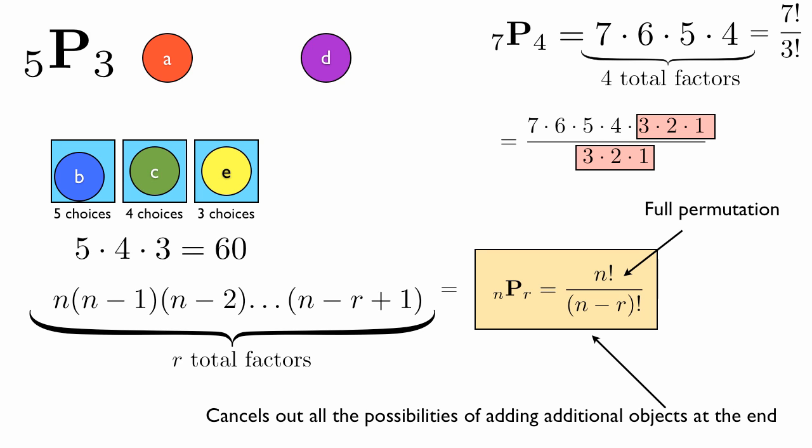So the key thing to keep in mind: the first number tells you where you start out from. Your first number you're going to multiply is always going to be 7 or 5 or whatever the first number is in the permutation notation. The second number tells you how many times you multiply it, going down every time. So 7P4, you start with a 7, and you multiply it by four total factors going down once every time. So we have 7 times 6 times 5 times 4. The special case 7P7 is when it actually is just 7 factorial, because we go down all the way until we hit 1.